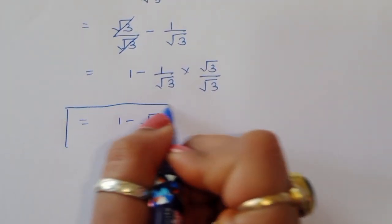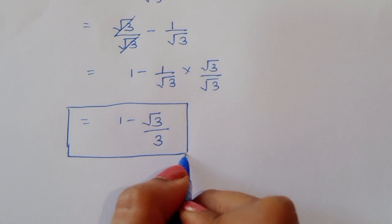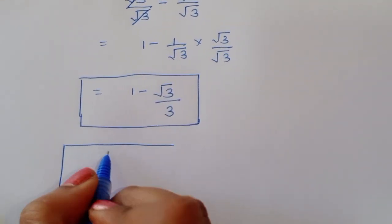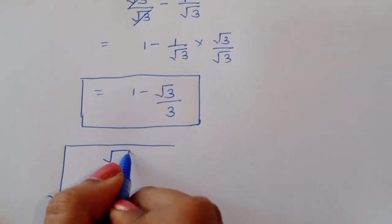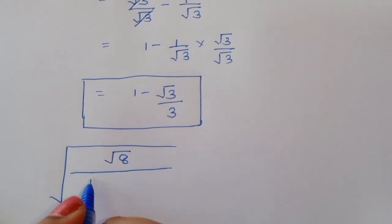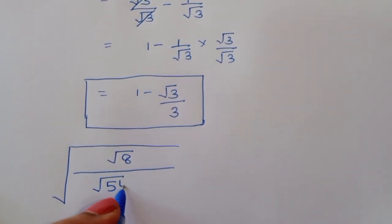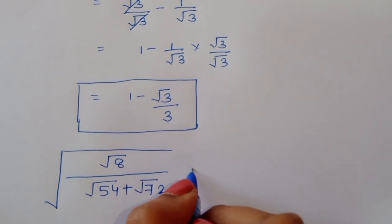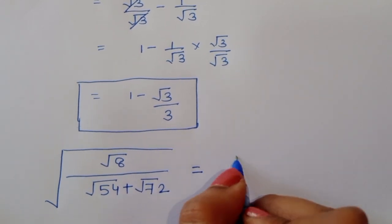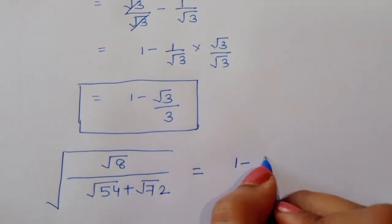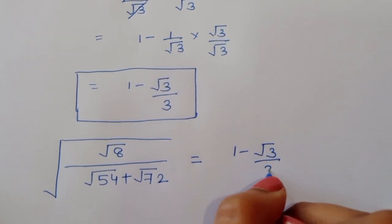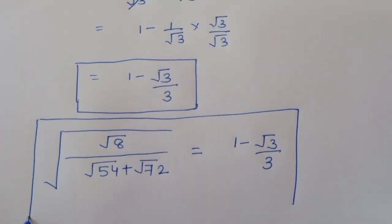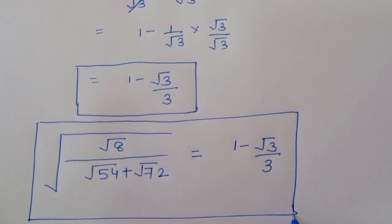So the final answer is: square root of 8 divided by (square root of 54 plus square root of 72) equals (1 minus square root of 3) divided by 3. This is the solution.